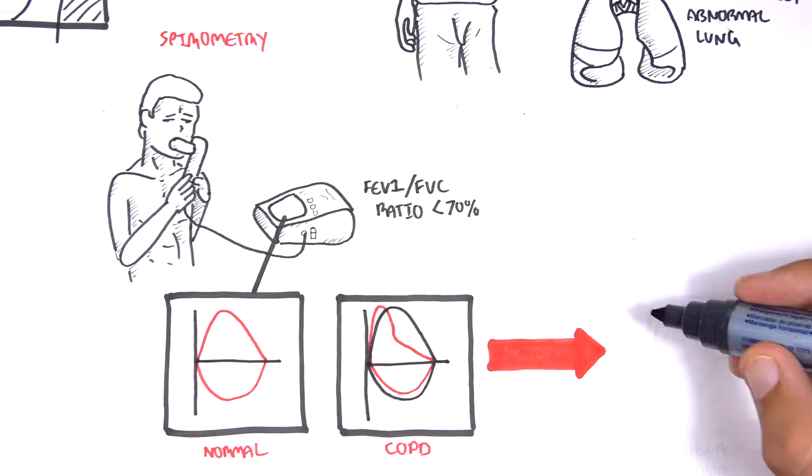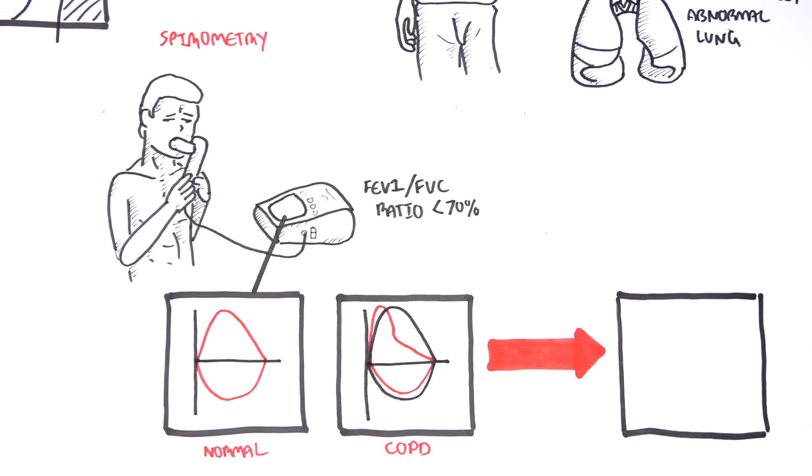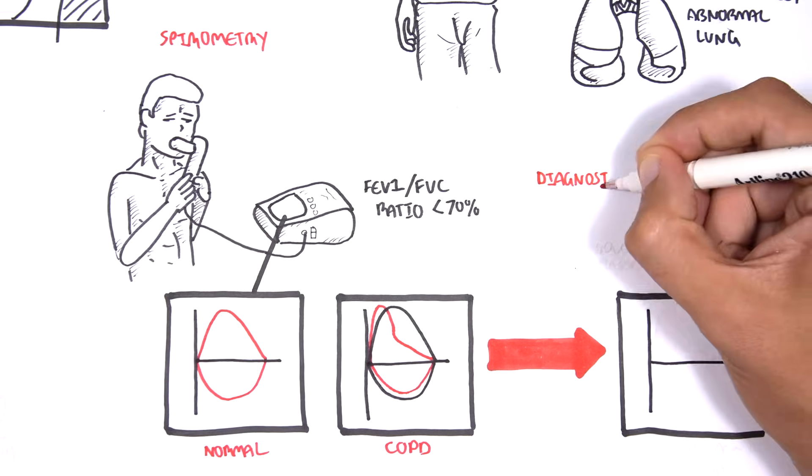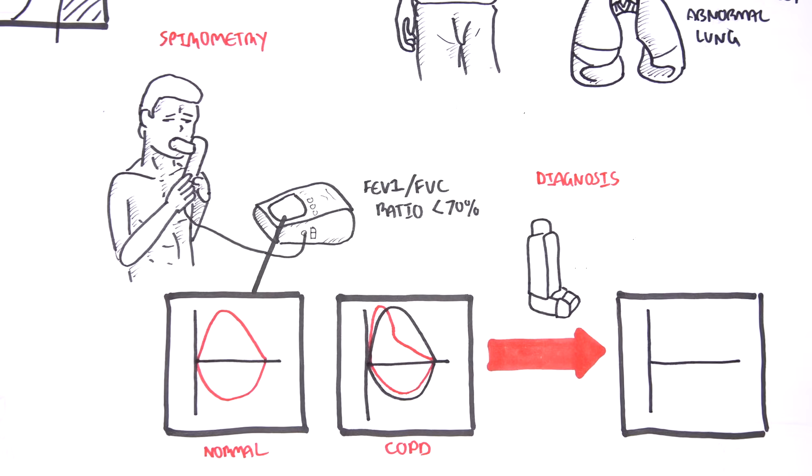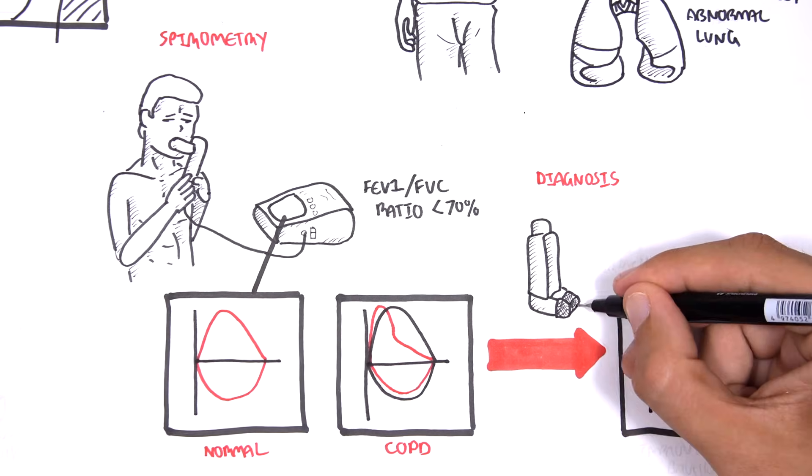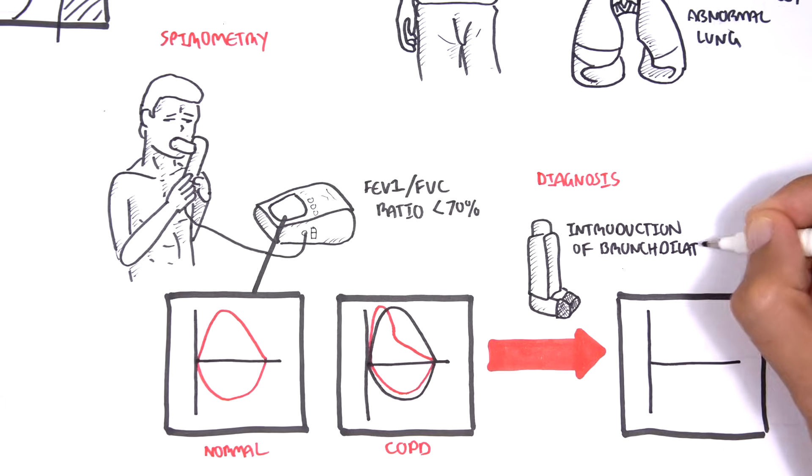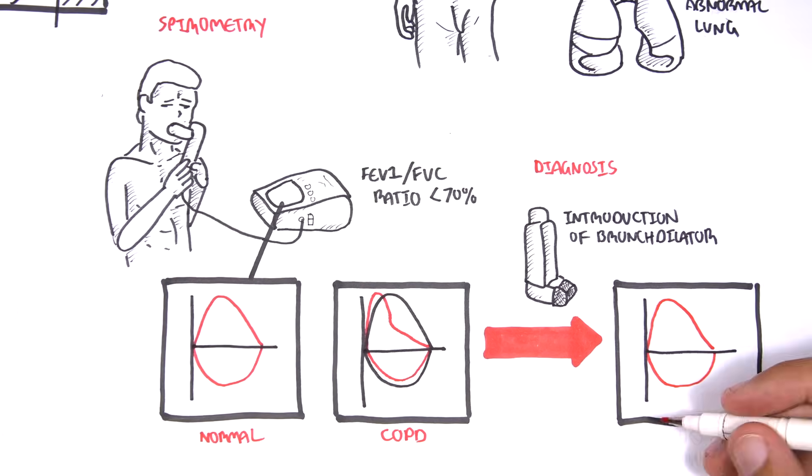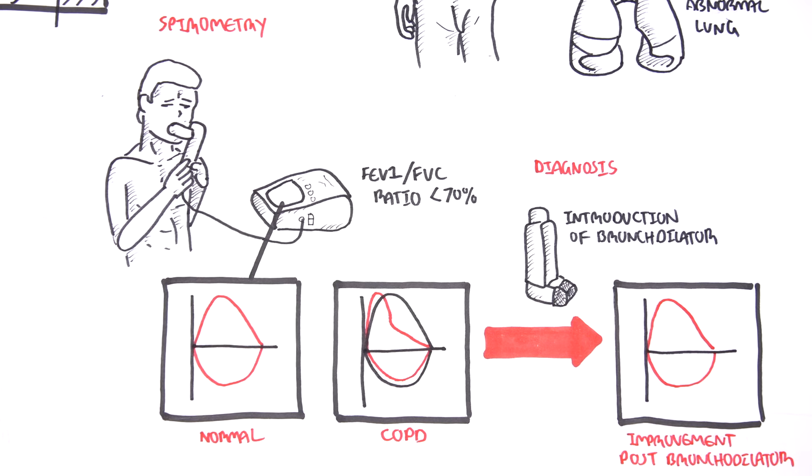Also, to be sure it is COPD, the administration of a bronchodilator following the first spirometry reading should improve the lung function. And so on the next spirometry reading, the graph should go closer to normal.